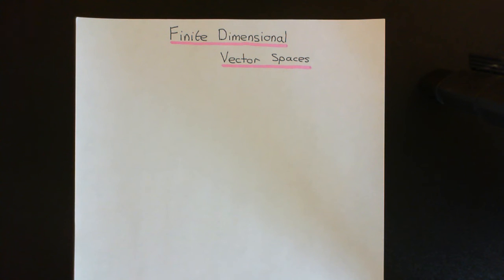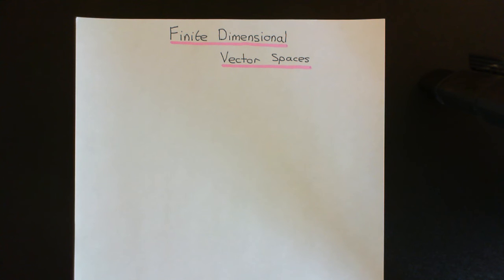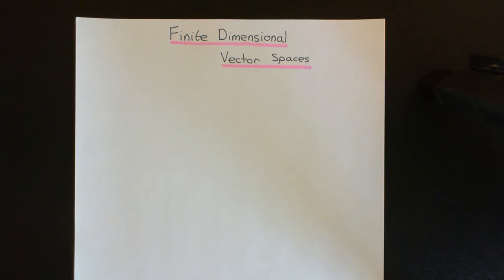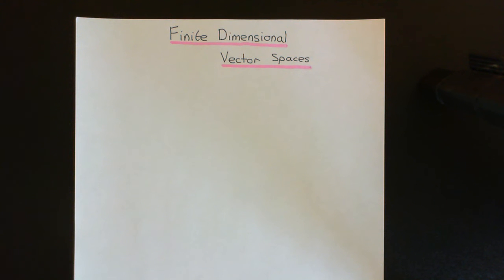Welcome to this next video in the playlist on vector spaces. In this video, we're going to discuss finite dimensional vector spaces. We're firstly going to define what is meant by a finite dimensional vector space, then prove that all finite dimensional vector spaces have a basis. We'll also prove that the number of elements in any two bases for a finite dimensional vector space is always the same. Then we'll define the dimension of a finite dimensional vector space, and finally prove that the dimension of a subspace is less than or equal to the dimension of the initial space.